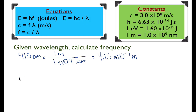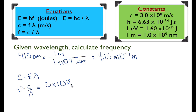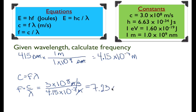I have to convert to meters to have base units for the metric system, which all my equations are based on. Now using the second equation to solve for frequency — since C equals frequency times wavelength, frequency equals C divided by wavelength. C is 3.0 times 10 to the 8 meters per second, divided by 4.15 times 10 to the minus 7 meters. The meters cancel, leaving 1 over seconds, or hertz — 7.23 times 10 to the 14 hertz.